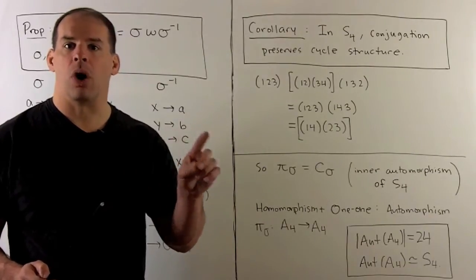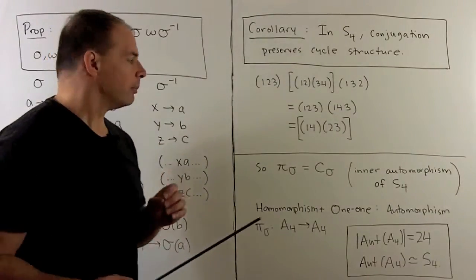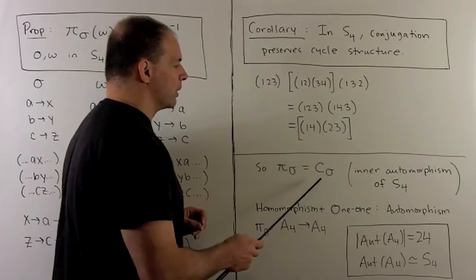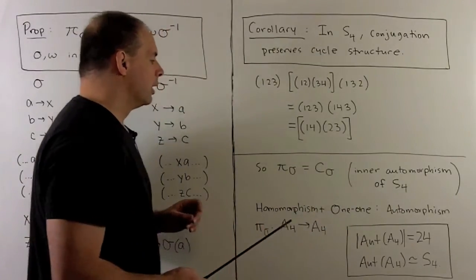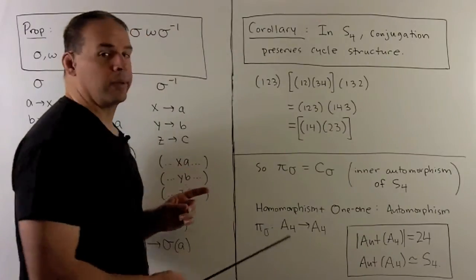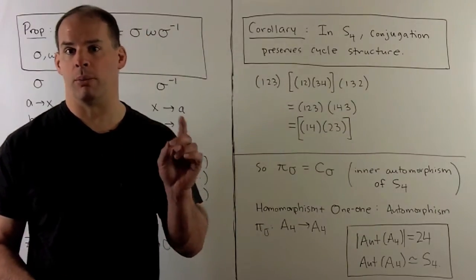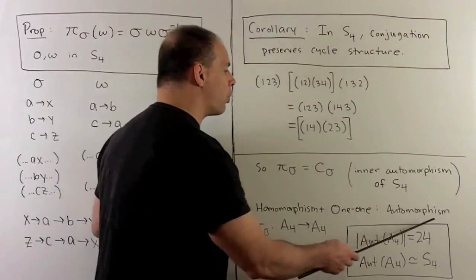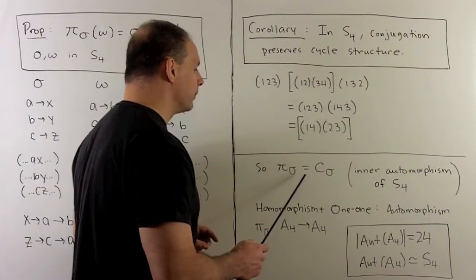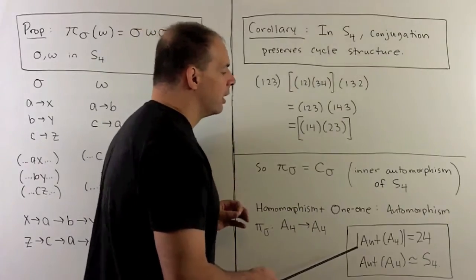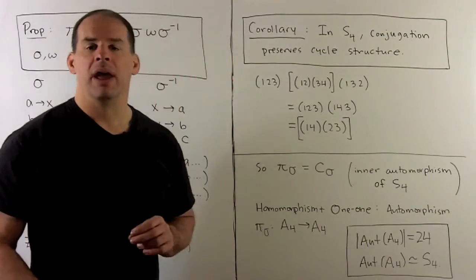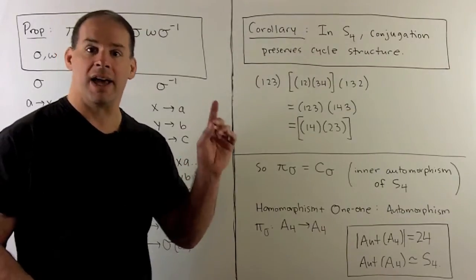Getting back to automorphisms of A4: a relabeling can be given as an inner automorphism for S4. We have a homomorphism, inner automorphisms are homomorphisms, and we have one to one, so we have an automorphism given by relabeling. That says the number of elements in the automorphism group of A4 is 24, and that group is isomorphic to S4.